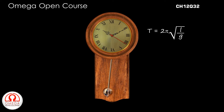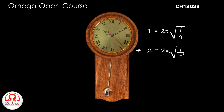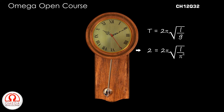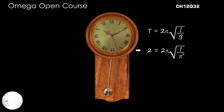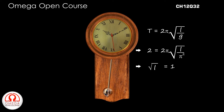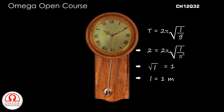Putting T = 2 and g = π², we get 2 = 2π × √(L/π²). Simplifying, we get √L = 1, or L = 1 meter.